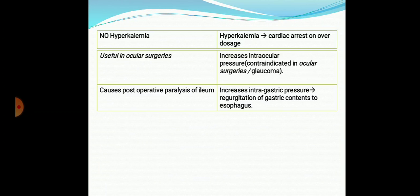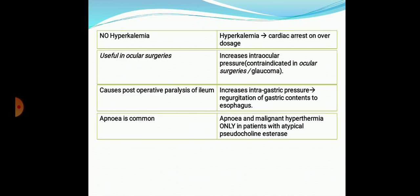Depolarizing blockers increase intragastric pressure, which can lead to regurgitation of gastric contents into the esophagus — potentially fatal during anesthesia. Apnea is very common with competitive or non-depolarizing blockers due to paralysis of respiratory muscles such as the diaphragm and intercostal muscles. With depolarizing blockers, apnea is observed only in patients with genetic variability — specifically those with atypical pseudocholinesterase — who cannot metabolize the drug at a normal rate. This is discussed under factors modifying drug action.